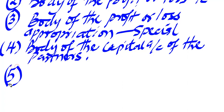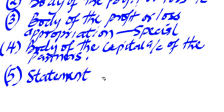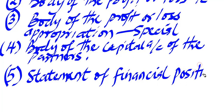After that, you have the last stage in preparation of the final account of a partnership, which is called the statement of financial position. So as you can see, there are five stages you need to undergo in preparing the final account of a partnership.